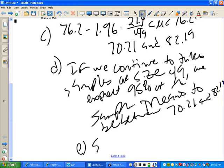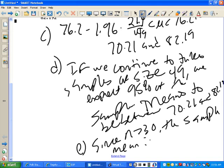Part E. Since N is greater than 30, the sample mean is normally distributed.